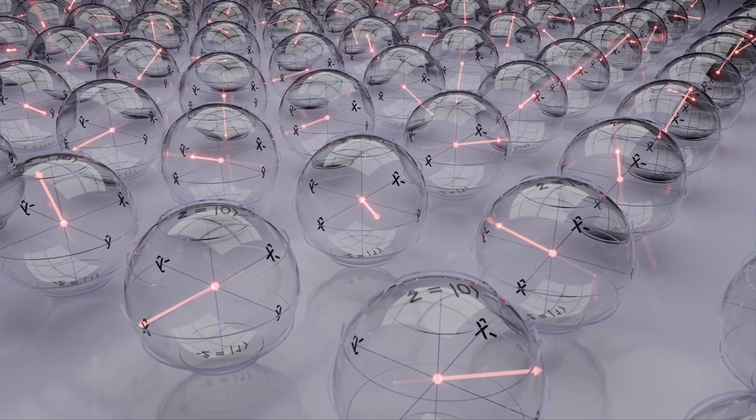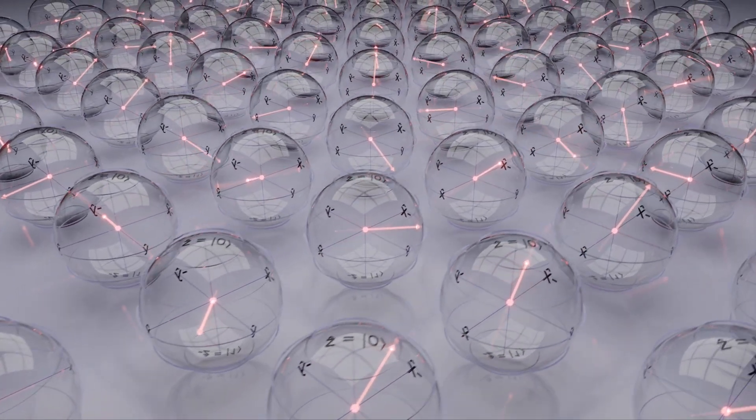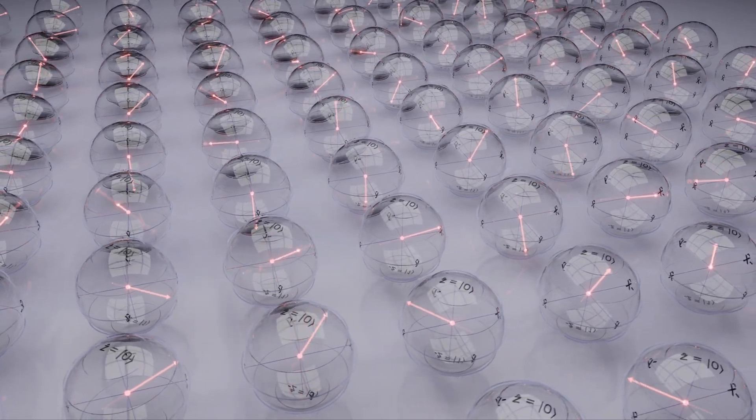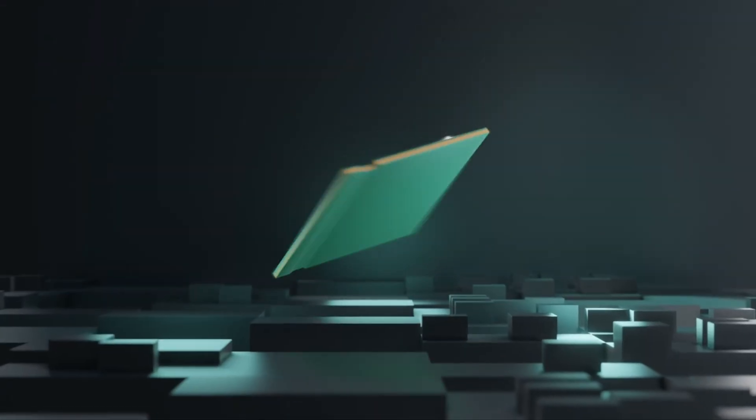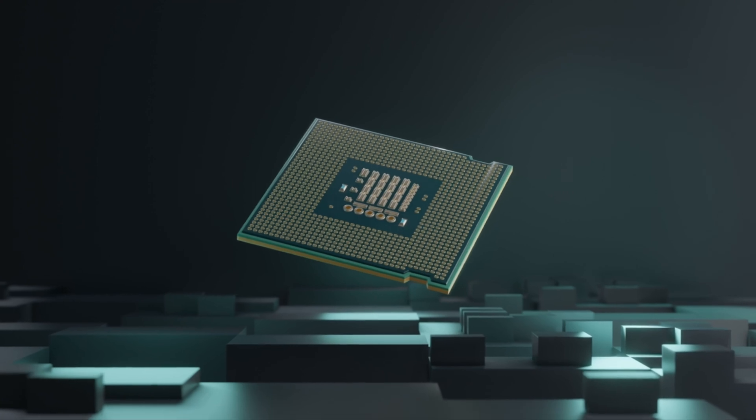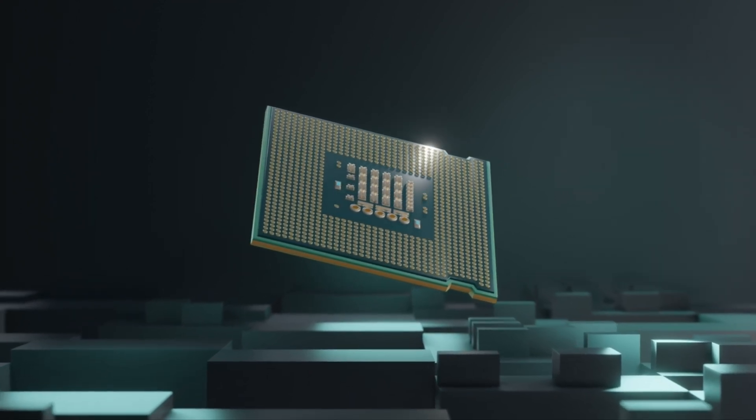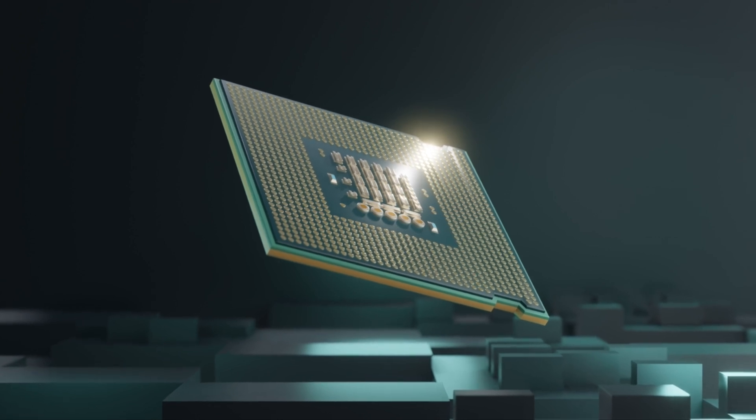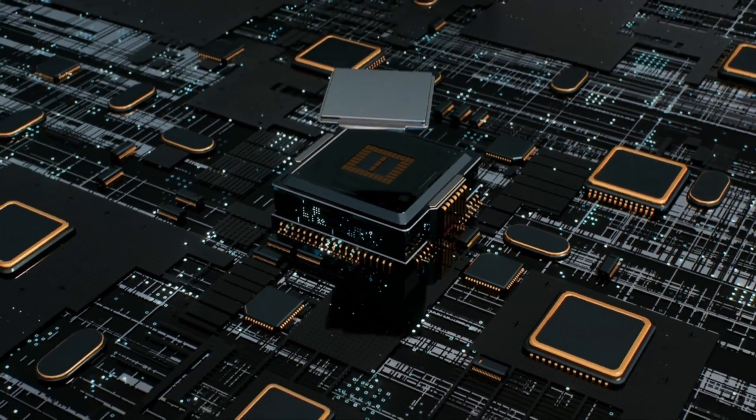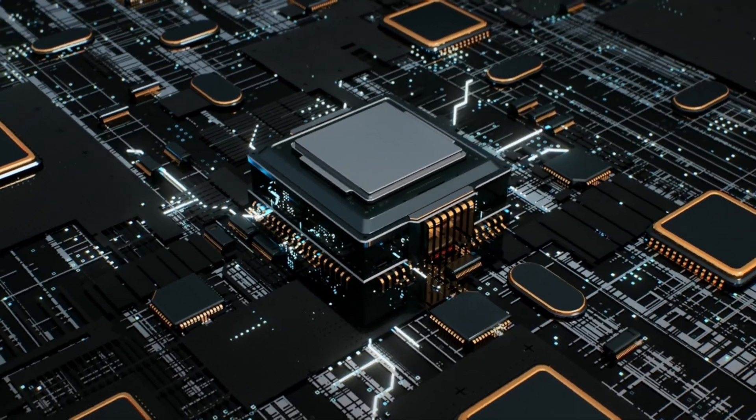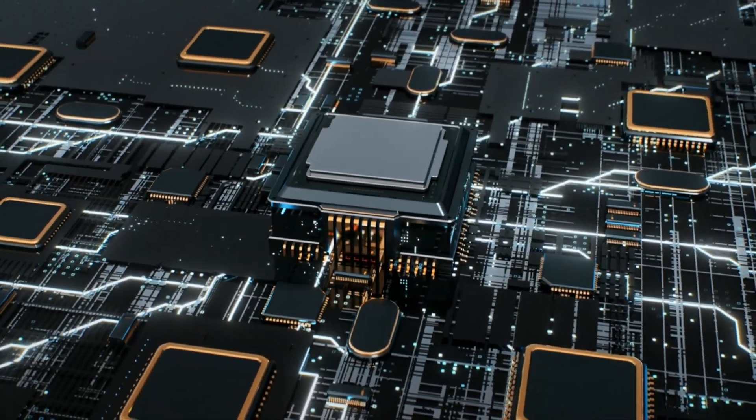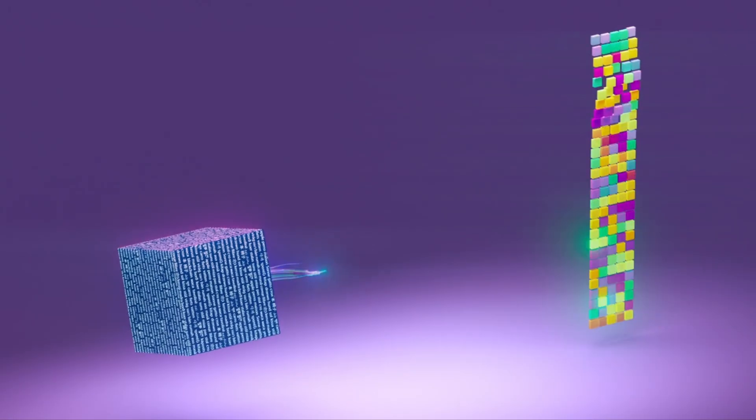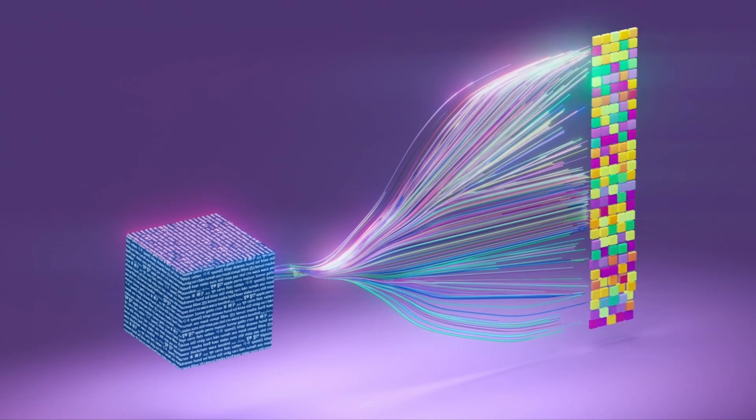And this isn't just theoretical planning. Microsoft has already demonstrated significant progress. As they stated, today, we hit our second milestone, demonstrating the world's first topological qubit. And we've already placed eight topological qubits on a chip designed to house one million. This highlights their commitment to building a scalable system. They've already placed eight topological qubits on a chip designed to scale to one million. This roadmap, combined with their tangible progress, underscores Microsoft's determination to lead the charge towards a fault-tolerant million qubit quantum future.